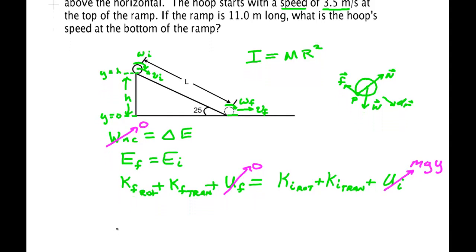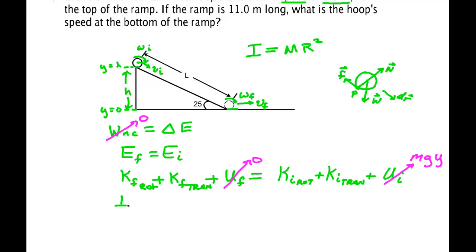At final, I'll have one half times I about the center mass times Omega final squared. That's the kinetic energy rotation. And I'll have one half M times the velocity final of the center mass squared. And that has to equal one half times the moment of inertia times the initial angular speed squared, plus one half times the mass times V initial squared, plus M, G, times Y, which in our case is H.